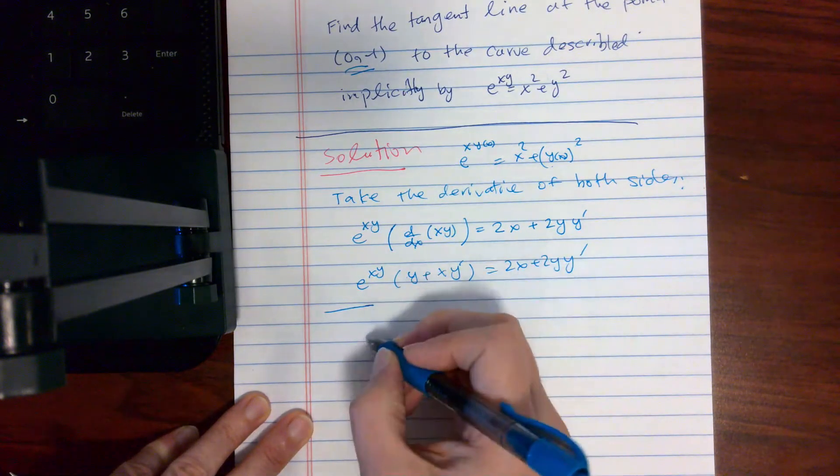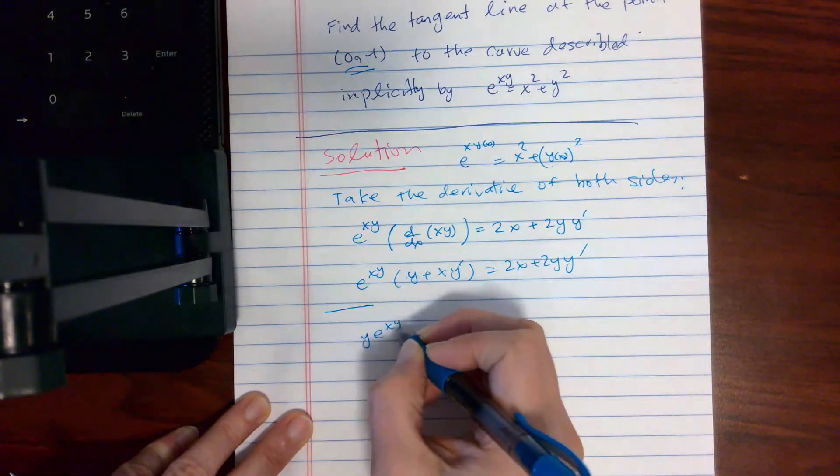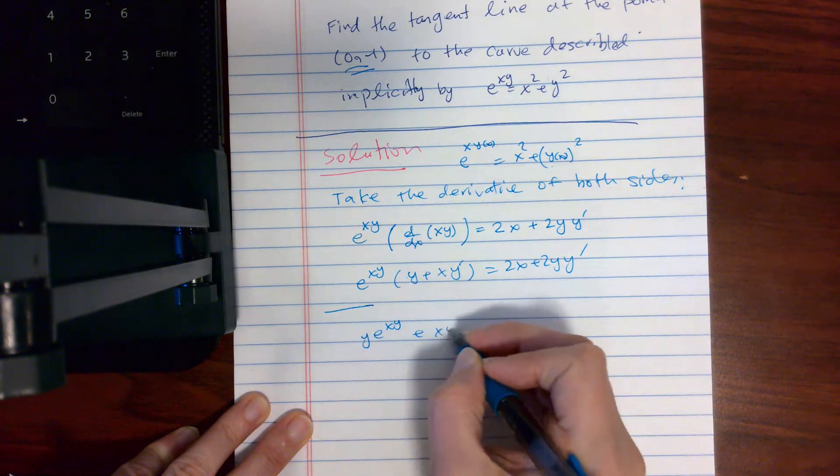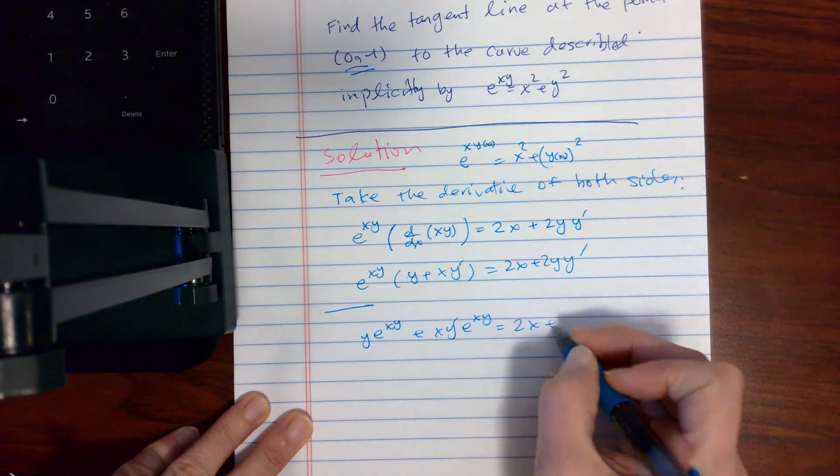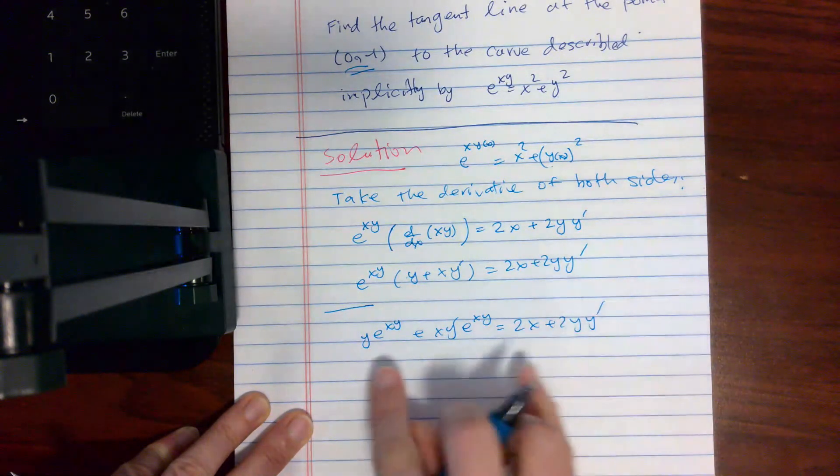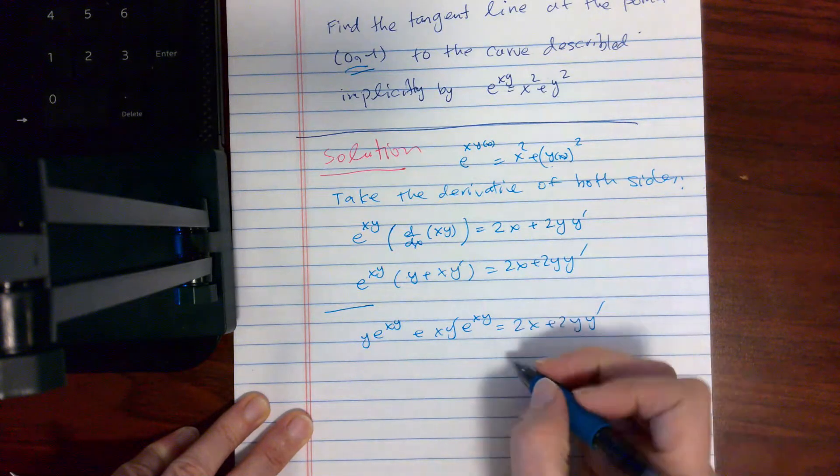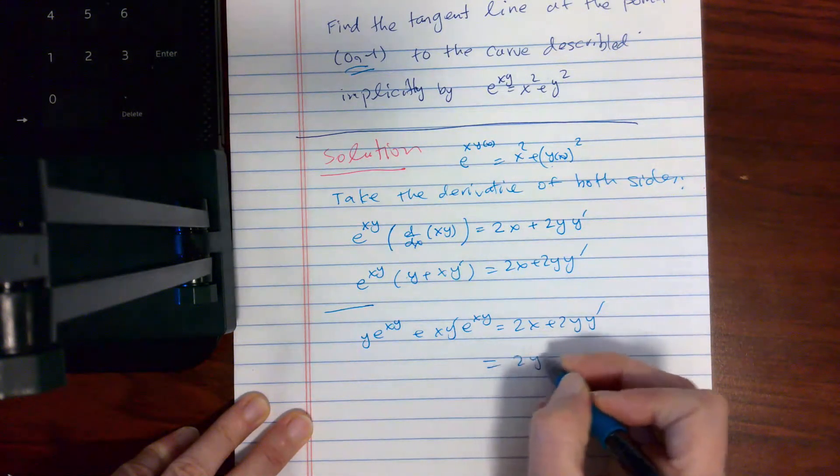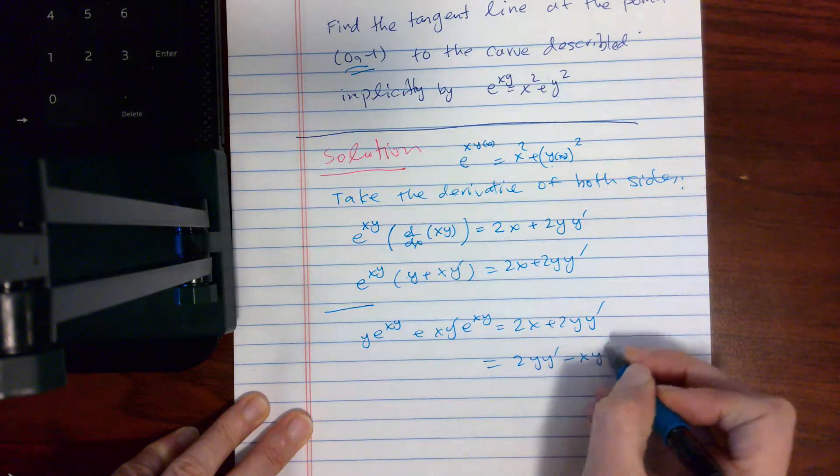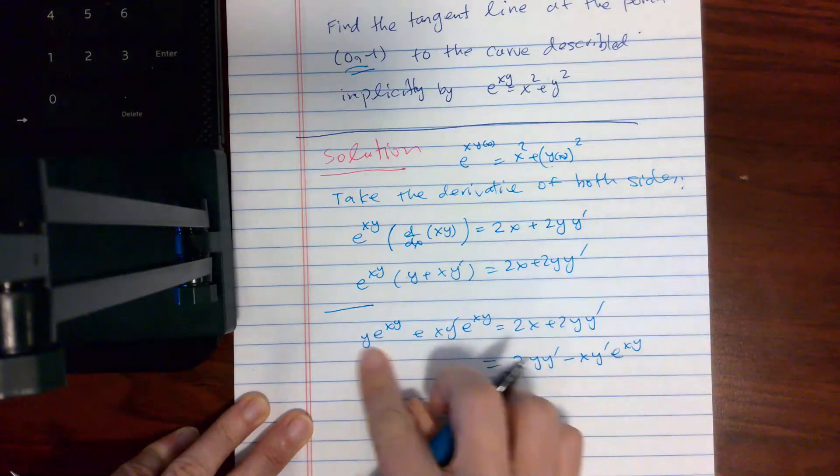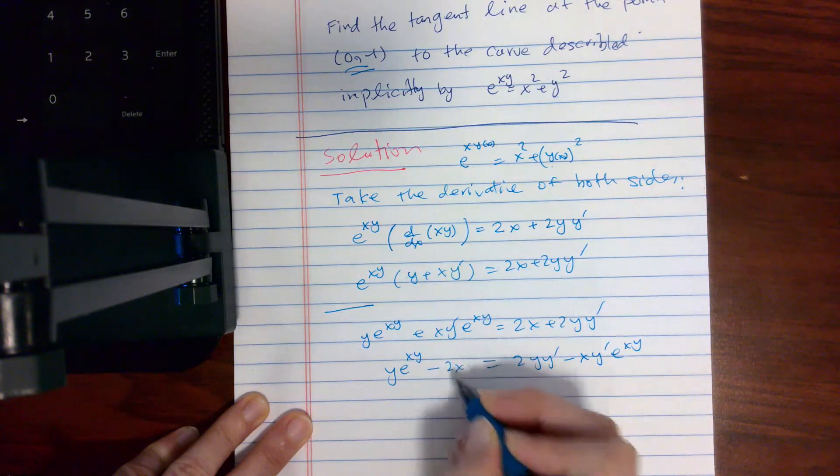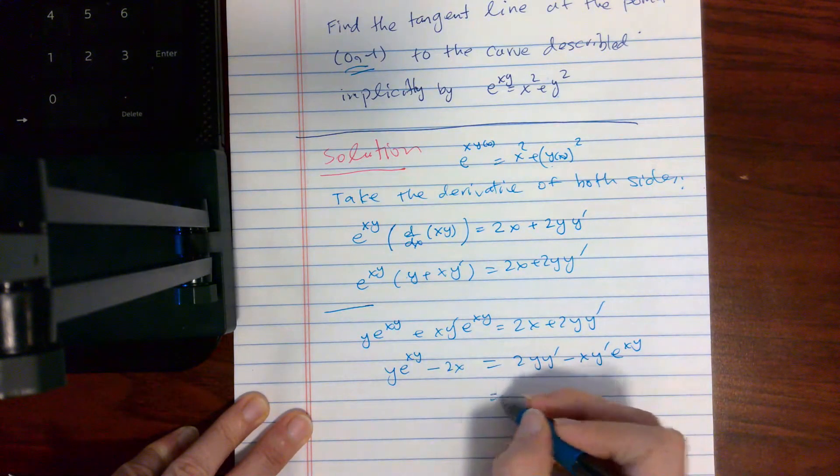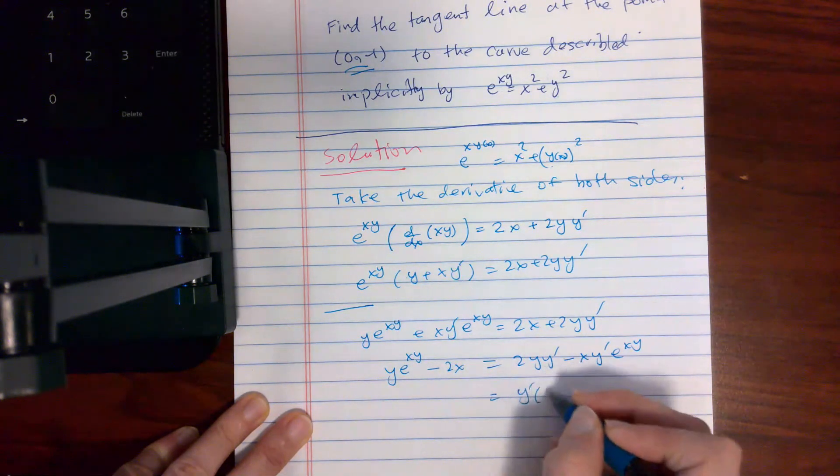And so it would be y e^(xy) plus x y' e^(xy) equal to 2x plus 2y y'. The two terms with y' on one side. The two terms without y' should be on the other side. Now solve for y'.